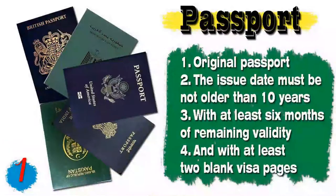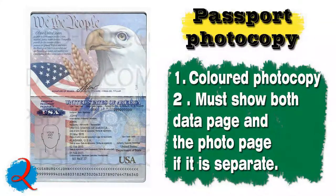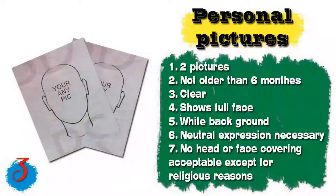Speaking about the documents you will need to apply for the visa: the first document is your passport. The passport must be original, the issue date must not be older than 10 years, with at least six months of remaining validity, and with at least two blank visa pages for stamps. Number two, you will need a photocopy of your passport — preferably colored — showing both the data page and the photo page. Number three, you will need two personal pictures not older than six months, clearly showing the full face with a white background, neutral expression, and no head or face covering except for religious reasons.